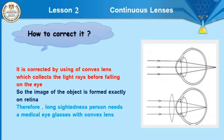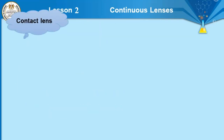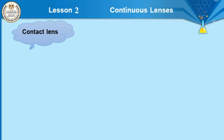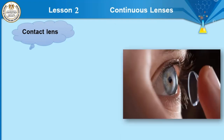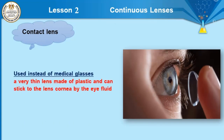From this, we conclude that vision defects can be classified into two types: short sightedness and long sightedness. Now we will talk about a very important application on lenses, which is called contact lens. Contact lens is a lens used instead of medical glasses. It is a very thin lens made of plastic that can stick to the cornea by the eye fluid.